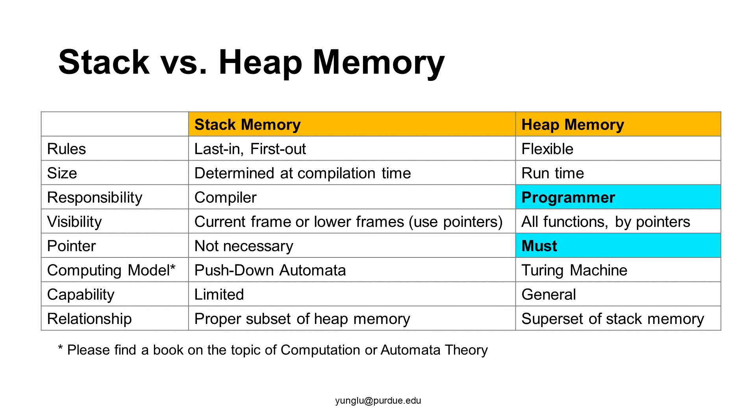The following topics are more advanced. Stack memory's computation model is push-down automata. Heap memory's computation model is Turing machine. If a computer program can use only stack memory, this program is limited. Some problems cannot be solved. If a program can use heap memory, this program can solve more problems. In fact, the problems that can be solved by a Turing machine is a proper superset of the problems that can be solved by a push-down automata. If you are interested in the computing models, please find a book about computation theory or automata theory.